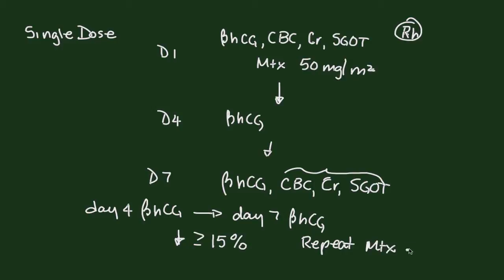And you do the whole thing over again. The difference between single dose and two dose actually occurs here on day four. On day four, you give another dose of methotrexate 50 milligrams per meter squared. That's the only difference between the single dose and the two dose regimens.